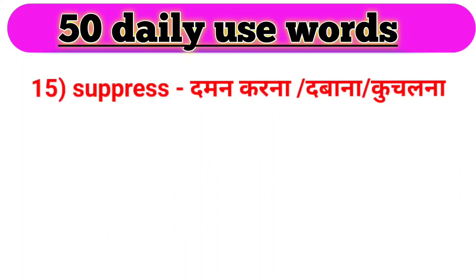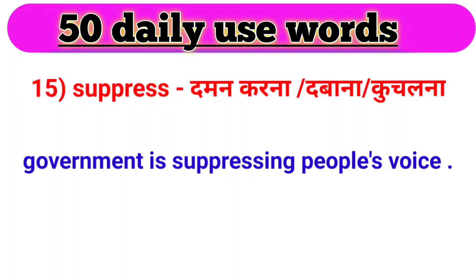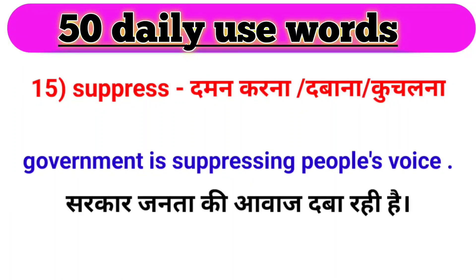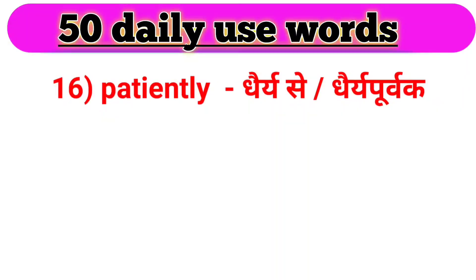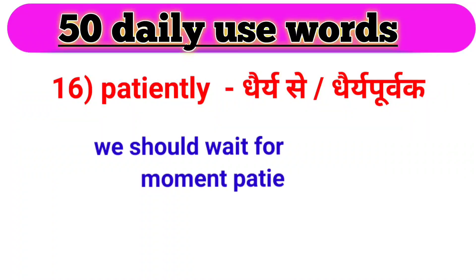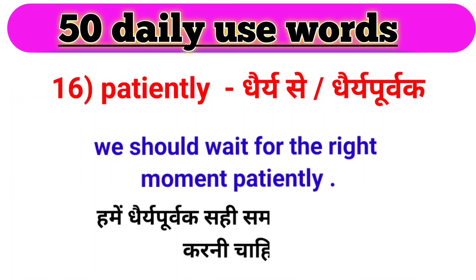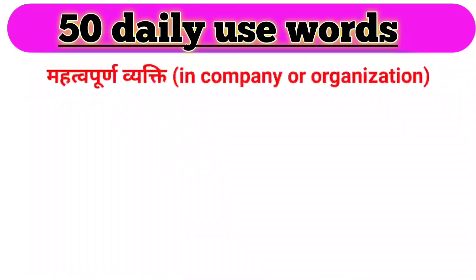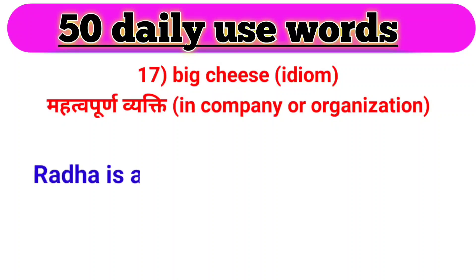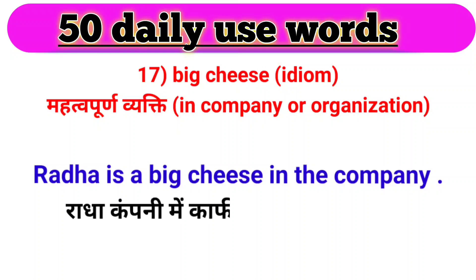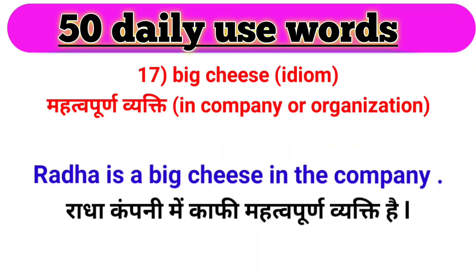Next word, we have suppress. Suppress ka matlab hota hai daman karna ya dabaana ya kuchalana. For example: Government is suppressing people's voice. Sarkar janata ki awaaz daba rahi hai. Next word, we have patiently. Patiently ka matlab hota hai dhairy se ya dhairy purwak. For example: We should wait for the right time patiently. Hame dhairy purwak sahi samay ki prateeksha karni chahiye. Agla hamaara ek idiom hai — big cheese. Big cheese ka matlab hota hai mahatvapurna vyakti. For example: Radha is a big cheese in the company. Radha company mein kaafi mahatvapurna vyakti hai.